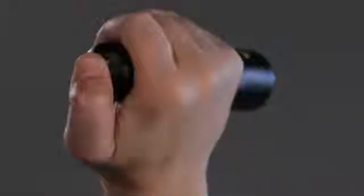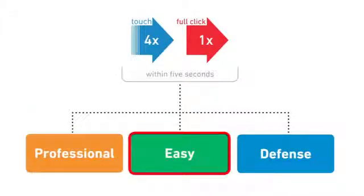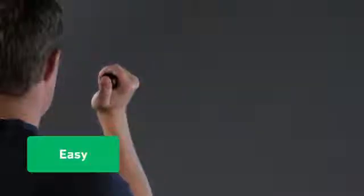First, let's walk through how we select one of the 3 light programs. By touching the tail cap 4 times and a full click on the 5th, we'll cycle from professional mode to easy mode to defense mode. The light will actually tell you which mode you're in by the number of times it blinks after you select the mode. If it blinks once, you're in professional; twice, you're in easy; and three times, you're in defense mode.